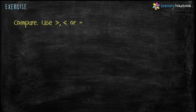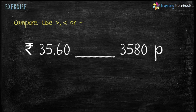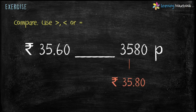Now compare Rupees 35.60 and 3,580 paise. 3,580 paise can be converted into Rupees 35.80. So Rupees 35.80 is greater than Rupees 35.60.